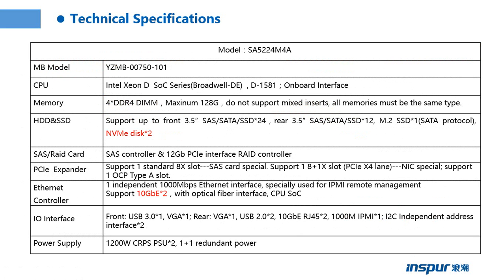This page shows the technical specifications. The server model is SF5224M4A. The motherboard part number is YZMB00740101. The CPU has been introduced. The memory can support up to 4 DDR4 DIMMs, maximum 128GB. The hard drives and SSD hard drives, the storage reader card, the PCIe expansion, and the network control are also listed. Power supply is one-plus-one redundant power.